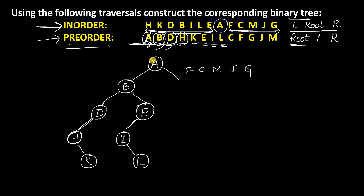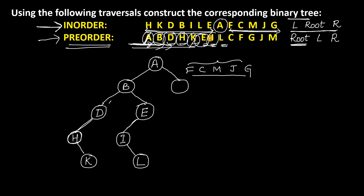Now come to the right side of A, with nodes F, C, M, J, G. Check which comes first in the preorder. C is coming first, so C is the root of the right subtree. To the left of C we have F — since there is only one node, directly write F as the left child. To the right of C we are left with three nodes: M, J, and G.